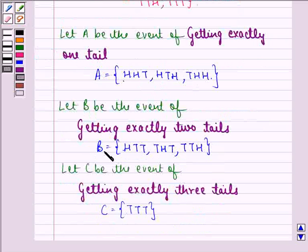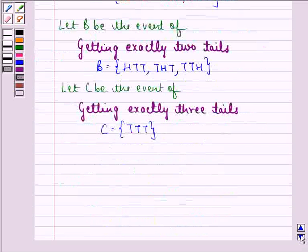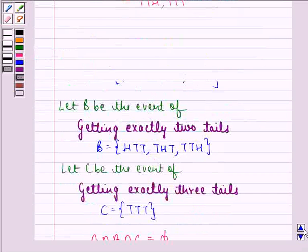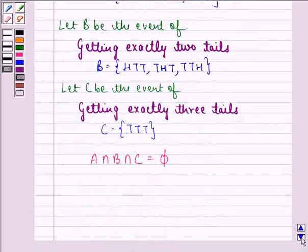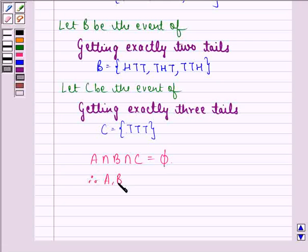Now we see that A, B and C are mutually exclusive because A intersection B intersection C is equal to phi. That means in three of them we see that no element is common. Therefore the intersection is phi and therefore A, B and C are mutually exclusive.